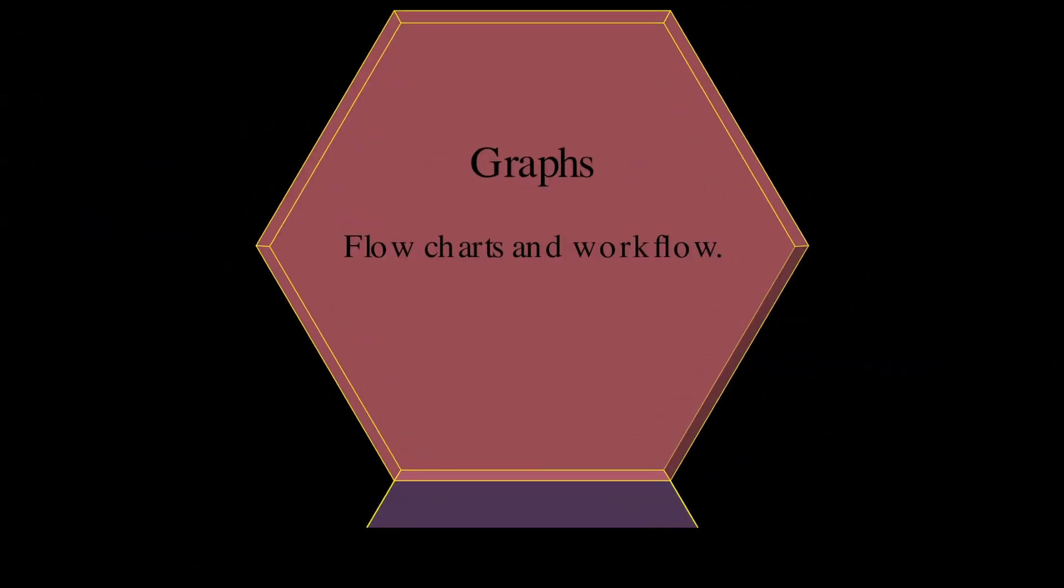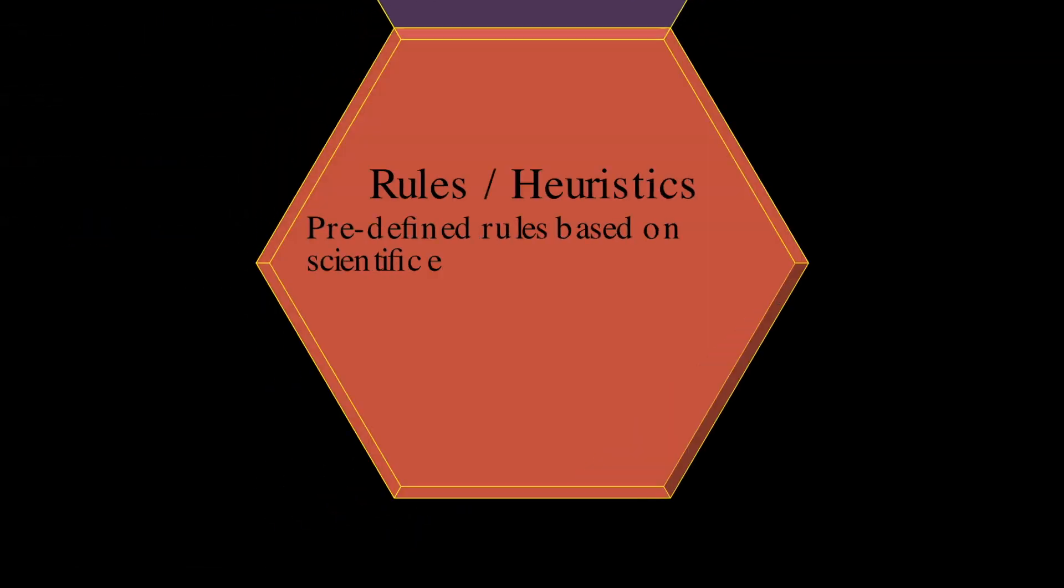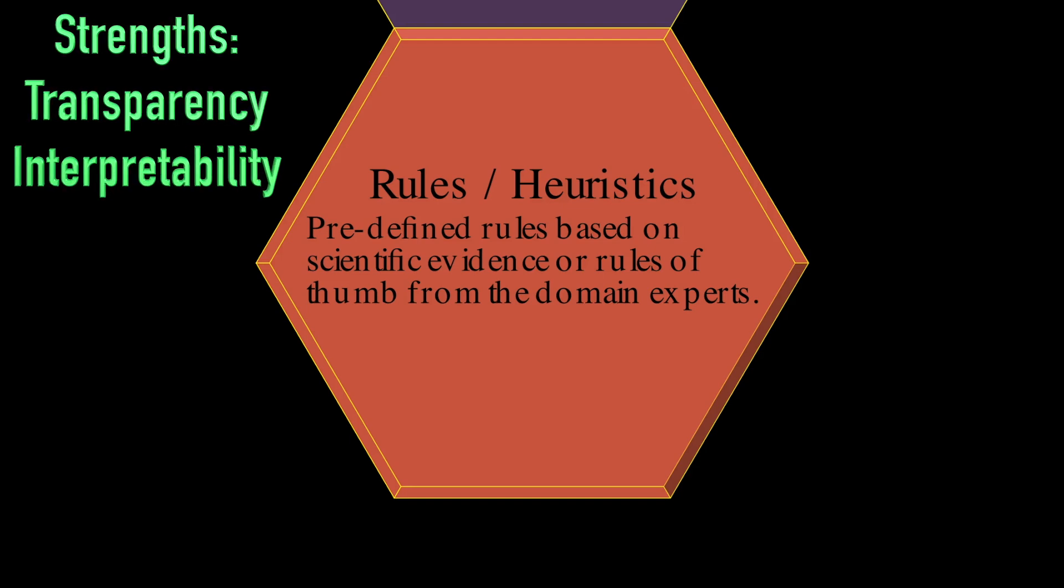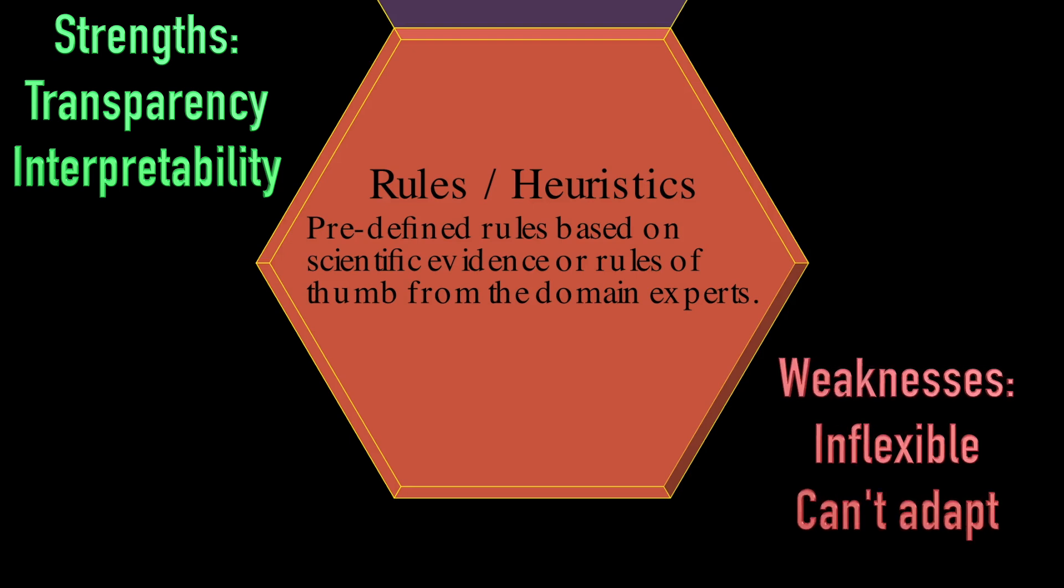Rules and heuristics use predefined rules based on expert knowledge or established practices. Their strengths? They're transparent, easy to interpret and quick to implement. Their weaknesses? They lack flexibility and the ability to learn from new data.